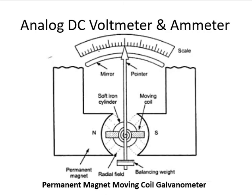How does a permanent magnet moving coil galvanometer work? The current to be measured is passed through the moving coil as shown in the figure. This current flowing through the moving coil produces an electromagnetic field. The electromagnetic field and the permanent magnet's magnetic field interact with each other and produce a torque. The torque developed on the pointer is proportional to the current flowing through the moving coil. Due to this, the pointer displaces, but its movement is damped using the soft iron cylinder.